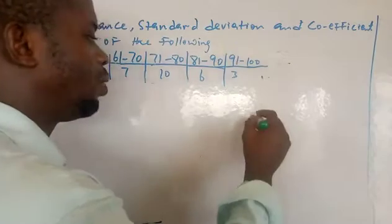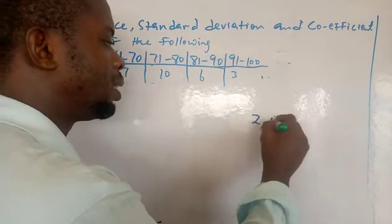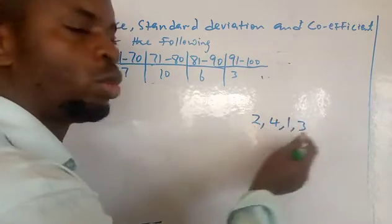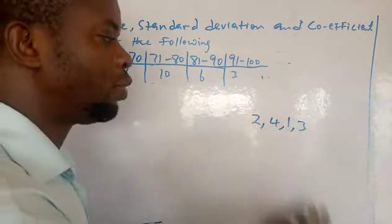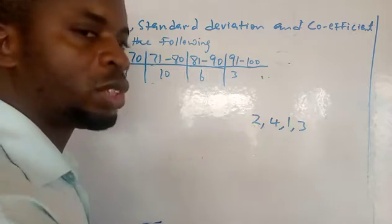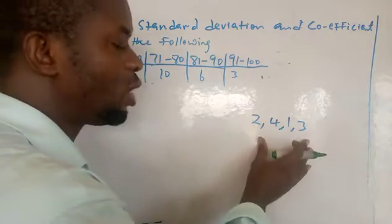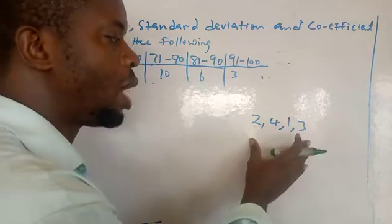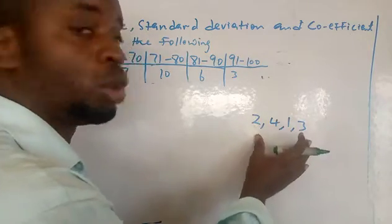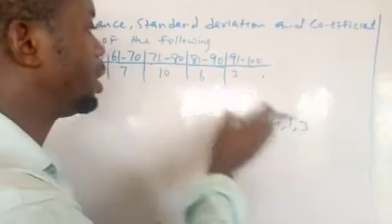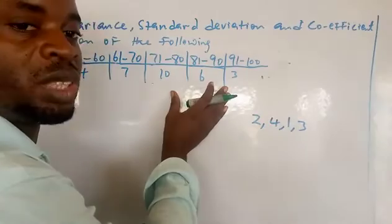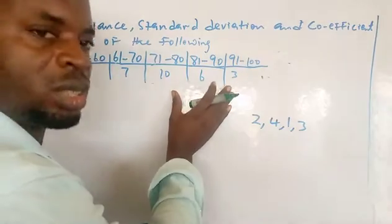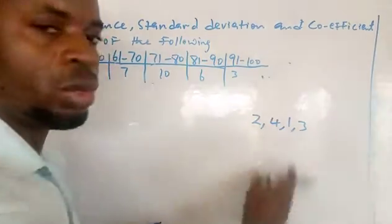For example, if I give you information like this — 4, 1, 3 — and ask you to find the standard deviation or variance of this, this data is ungrouped data because I am not using a table to present it. But a table is used to present grouped data. So this is grouped data, this is ungrouped data.